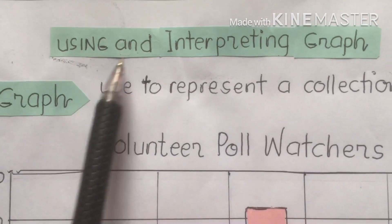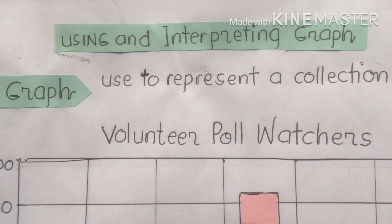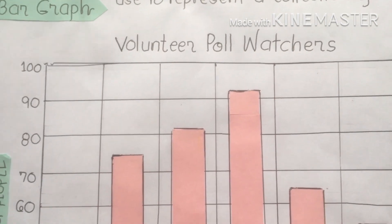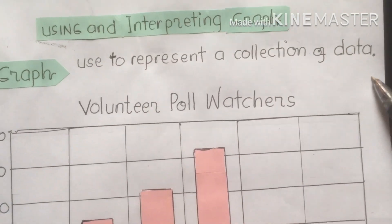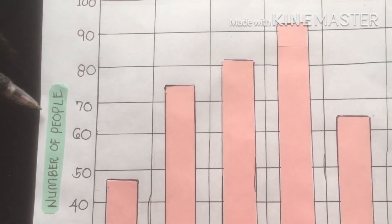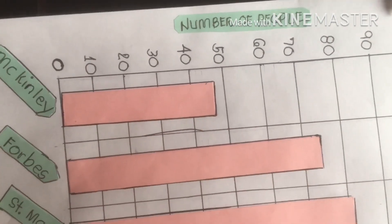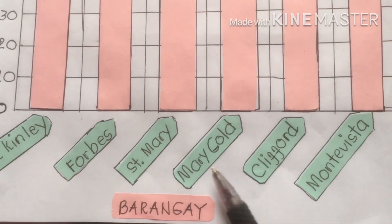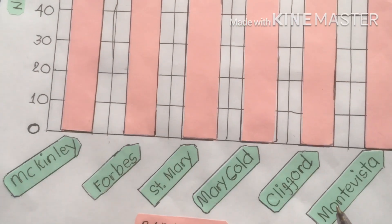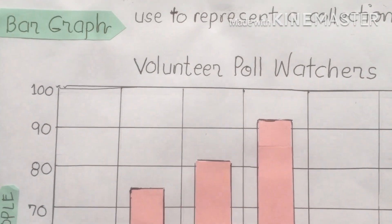Today we are tackling using and interpreting graphs. Remember there are different types of graph. The graph shown here is about the number of people who volunteered to watch the polls during the local elections. This is a bar graph, which is used to represent a collection of data. The y-axis shows the number of people from 0 to 100, and the x-axis shows the names of the barangays: Mackinley, Forbes, Saint Mary, Marigold, Clifford, and Monte Vista.